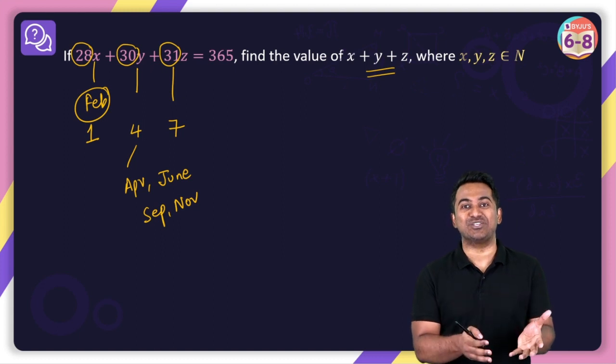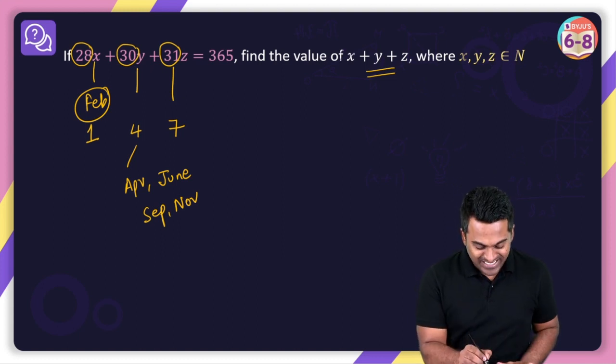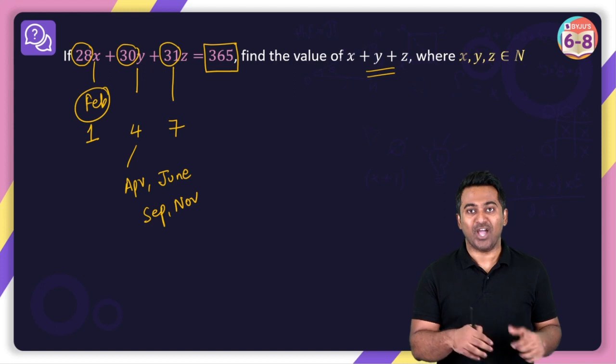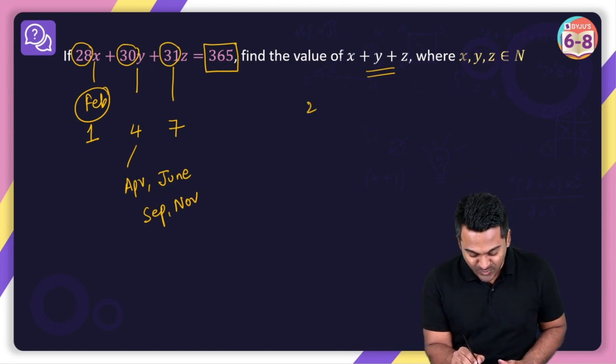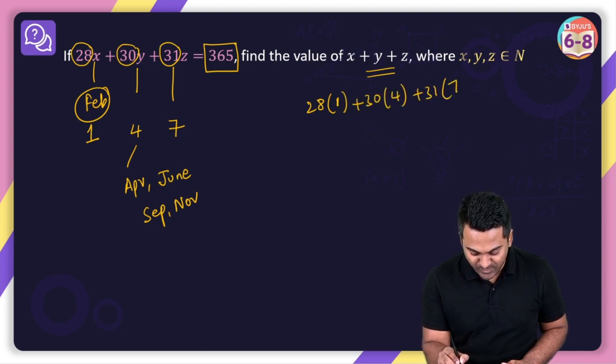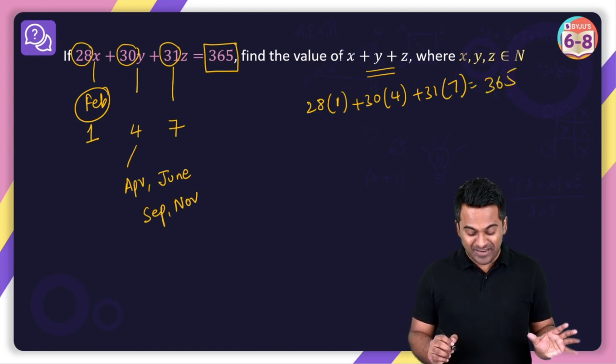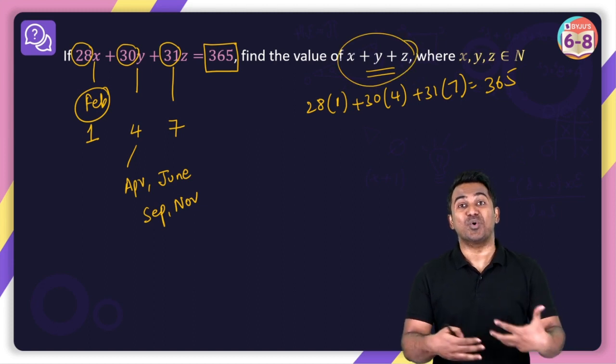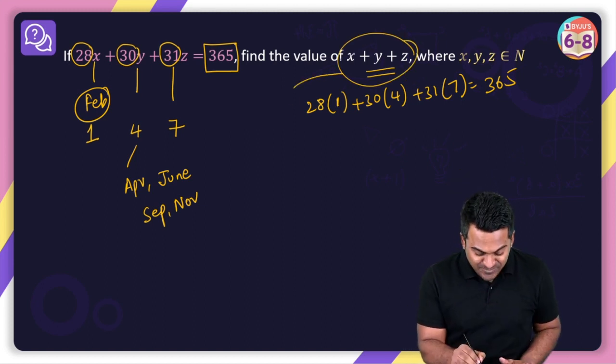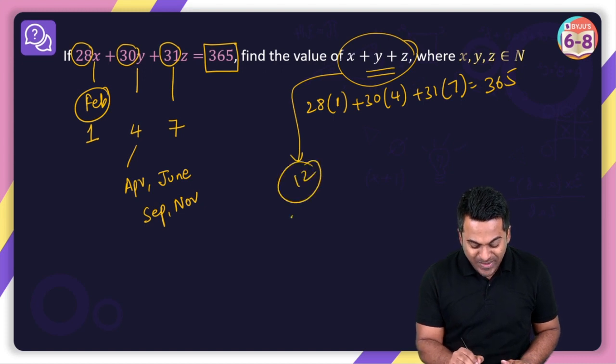So this is an equation to a calendar. And total, of course, in a year, a non-leap year, how many days are there? 365. So 28 multiplied with 1 plus 30 multiplied with 4 plus 31 multiplied with 7 is indeed going to give you 365. But then x + y + z is simply asking you what? How many total months are there in a year? So x + y + z is going to be 12. That's it.